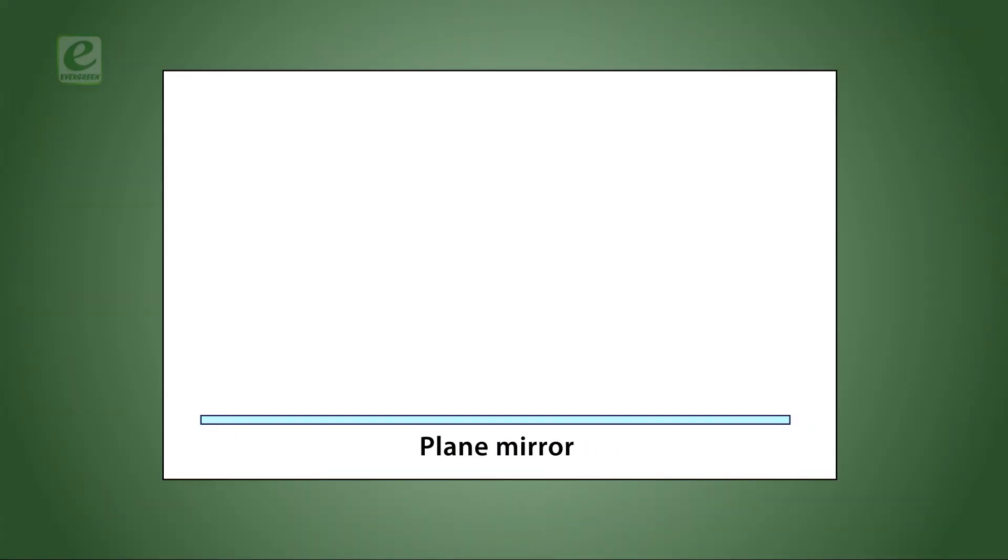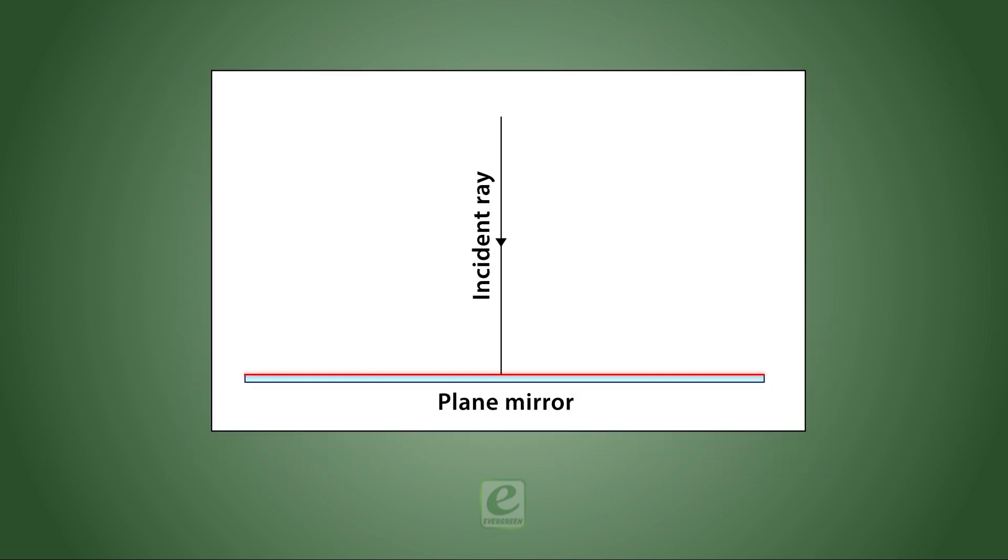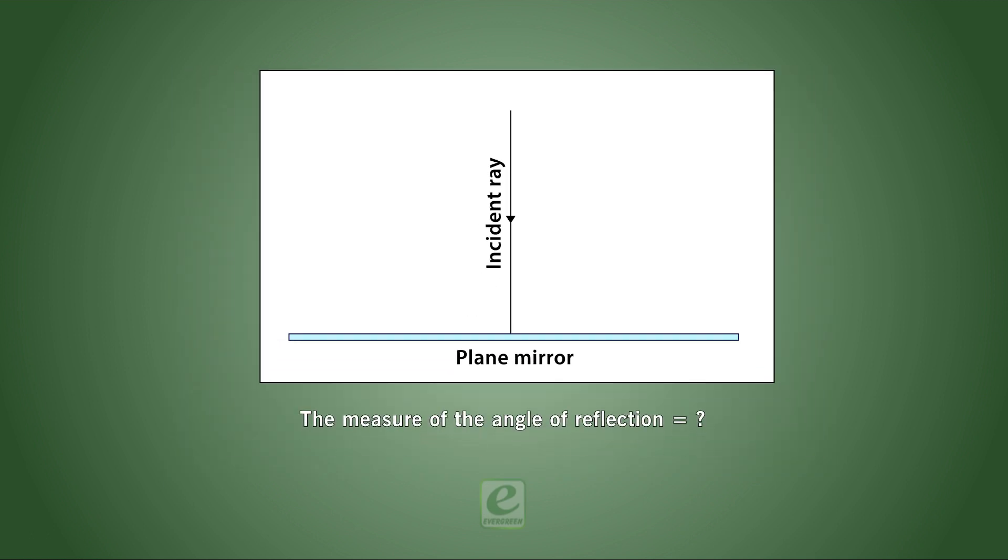Try to solve the following question. If an incident ray is perpendicular to the surface of a plane mirror, then what will be the angle of reflection and the direction of the reflected ray?